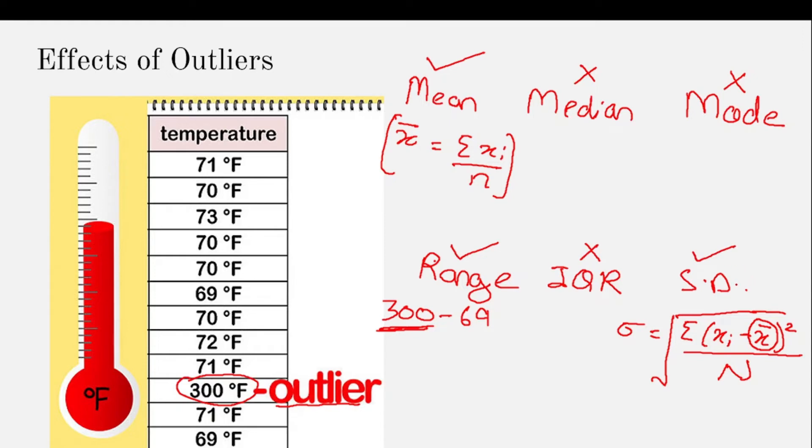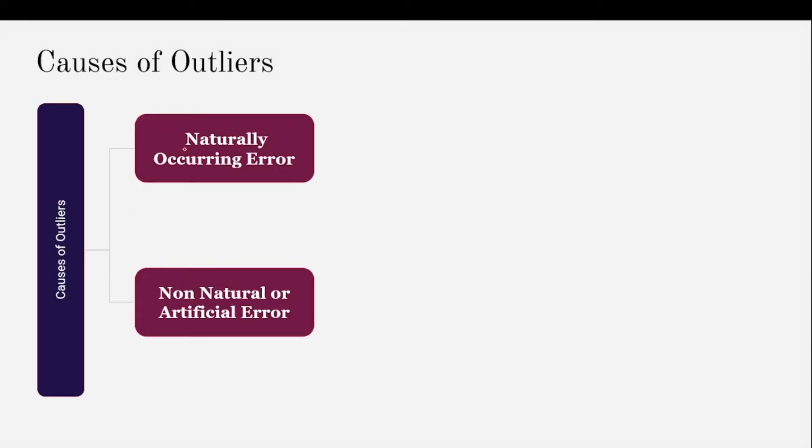Now let us see what are the causes for the presence of an outlier. Outliers can be present in a data distribution because of some natural error. For example, we know that the JEE Mains and Advanced exams are super tough, but still a handful of students are able to achieve near perfect scores out of lakhs given the examination. Hence this falls under the naturally occurring error.